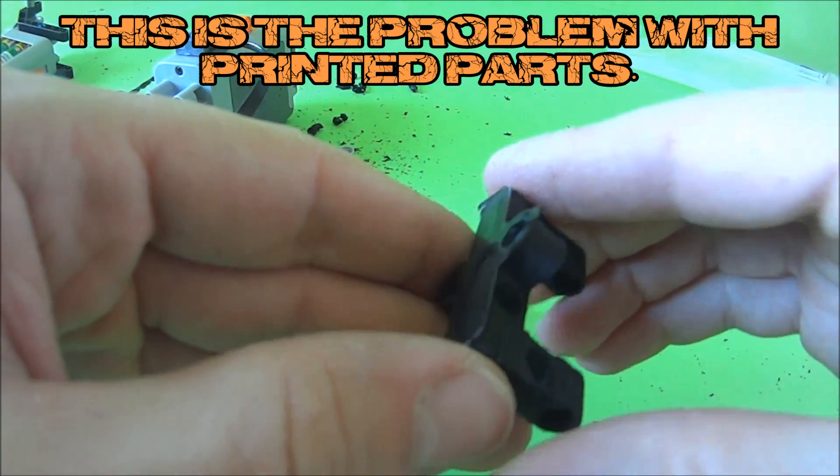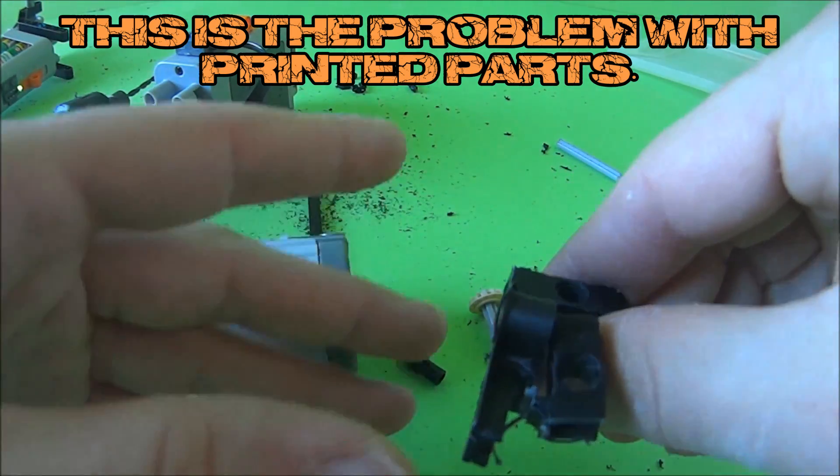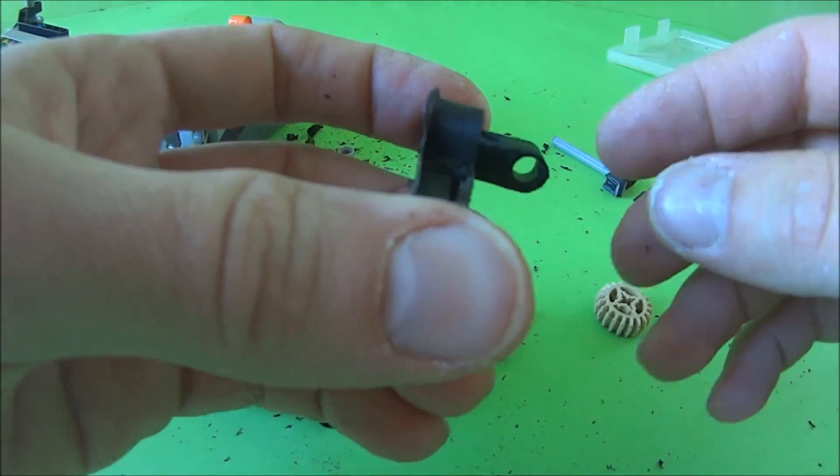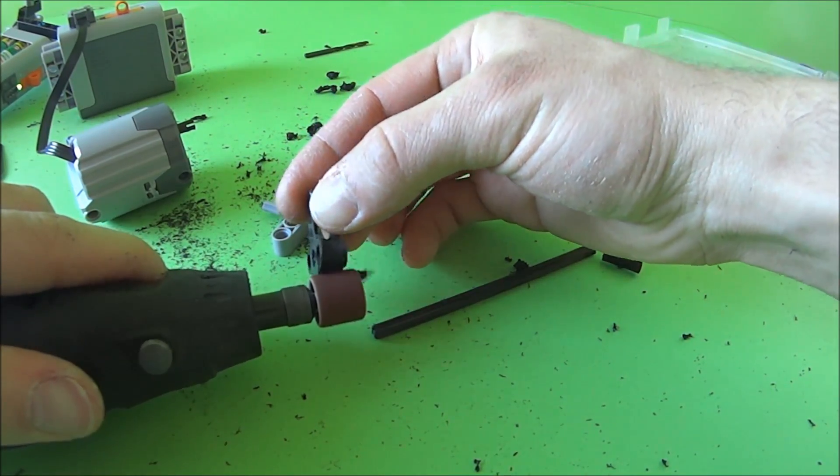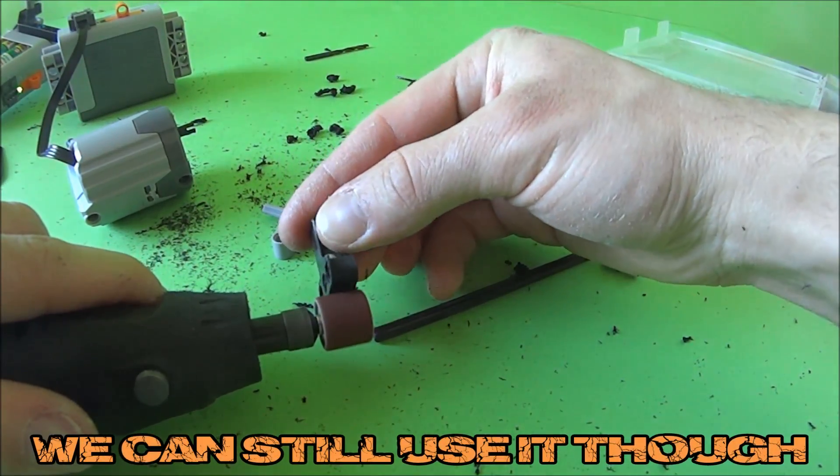Now, here's the problem with 3D printed parts. They are printed in layers and the way I made the axle hole made the layers come apart, so the part cracked, but we can still use it.